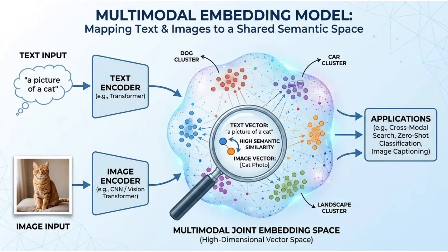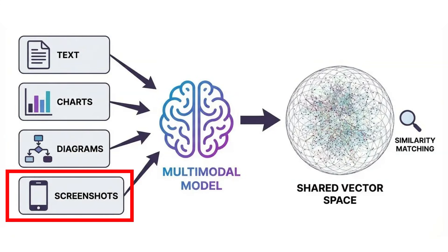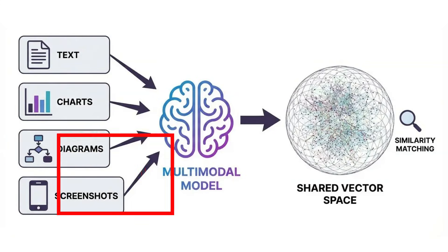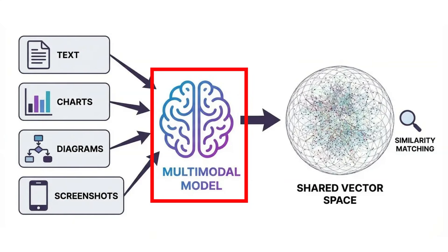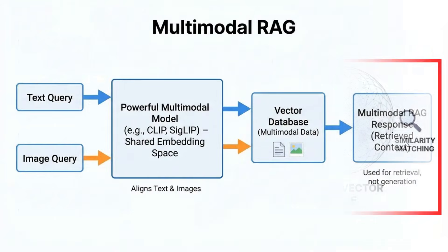The key insight is that a picture of a cat and the text 'a picture of a cat' should land in the same kind of semantic vector space. This unlocks a lot of possibilities — for example, most RAG systems just extract text from PDFs and throw away the images, but with multimodal embeddings we can get embeddings not just of text but of charts, diagrams, and screenshots, all in the same vector space for similarity matching.